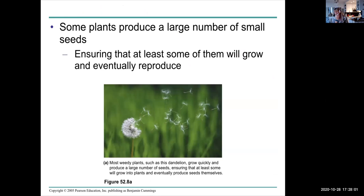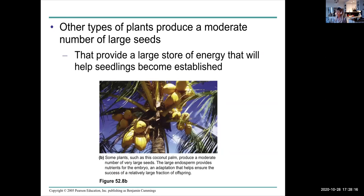Some plants' strategy is to produce a large number of small seeds. That way, some of them will grow and eventually reproduce. Weedy plants tend to have that strategy, like dandelions. Some produce a moderate number of very large seeds, but those large seeds are likely to survive because they have their own store of energy, and that helps the seedlings become established. These are coconut palms.